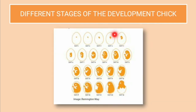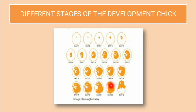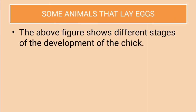These are the different stages of the development of a chick. Right from day 1 it is very minute, very small. As it grows older it gets bigger and bigger, and on the 21st day it comes out — there is a hatching of the chick. The above figure shows the different stages of the development of the chick.